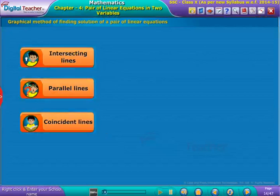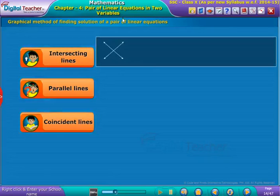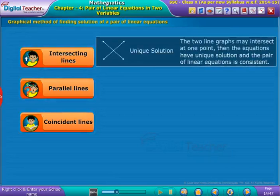The graph of a pair of linear equations in two variables is represented by two lines. When two lines are drawn in the same plane, any one of the following three situations is possible. The two lines on the graph may intersect at one point. Then the equations have a unique solution and the pair of linear equations is consistent.